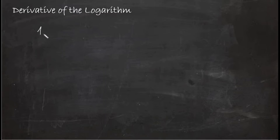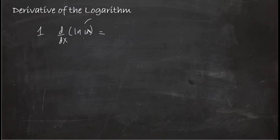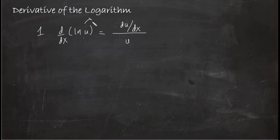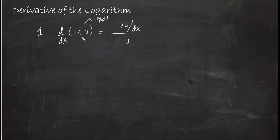First, we have the derivative of ln u. ln is the natural logarithm — it uses the natural base e. The derivative of ln u is equal to the derivative of u with respect to x, all over u.